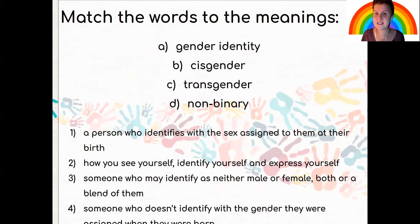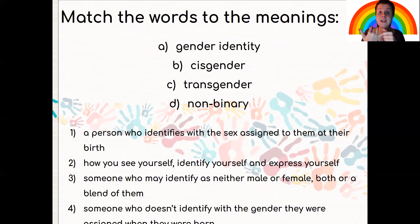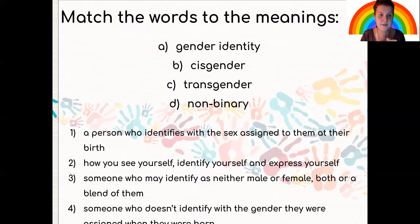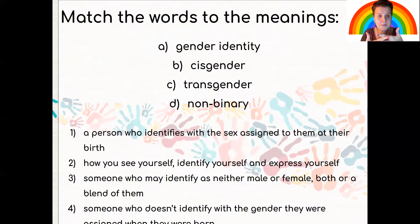Now let's practice a little. Here we have a matching exercise — match the words to the meanings. Letter A: gender identity. Letter B: cisgender. Letter C: transgender. And letter D: non-binary. Then you have numbers one, two, three, and four. Pause this video and do the exercise.